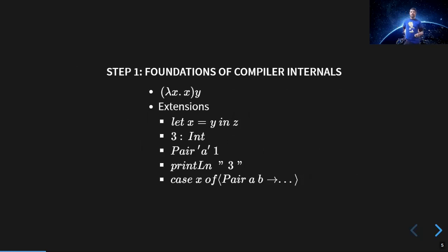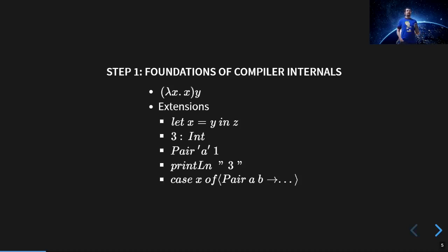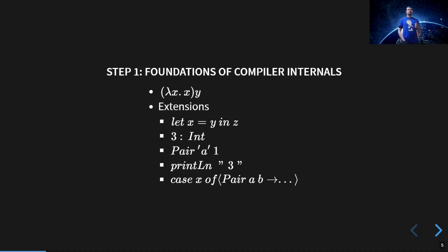Step one: when you create your own Idris backend, you need to understand the foundations behind these compilers. For functional programming languages, the intermediate representations are always some variation of the lambda calculus. Lambda calculus means we can create anonymous functions as closures and apply arguments to them. To implement something that runs with good performance, we have to extend this lambda calculus — though all extensions can still be represented inside it.